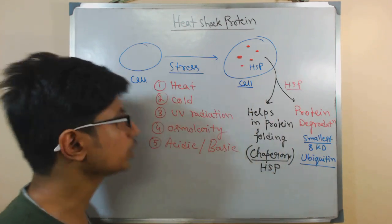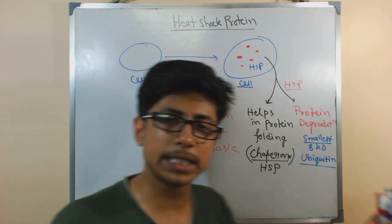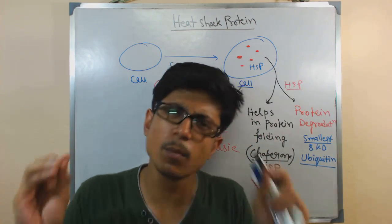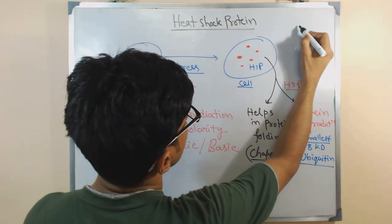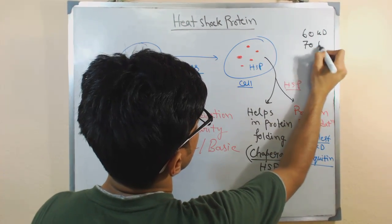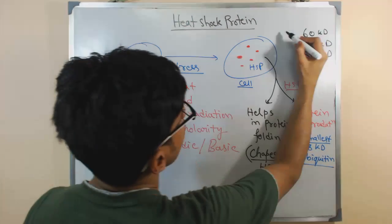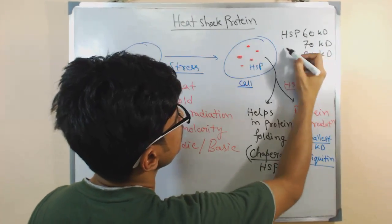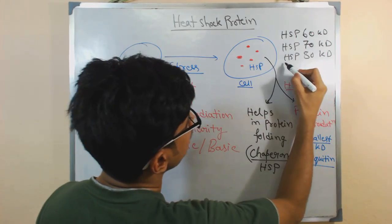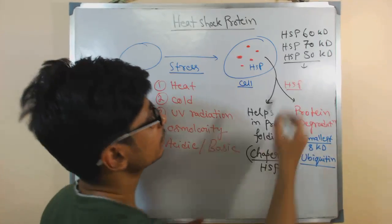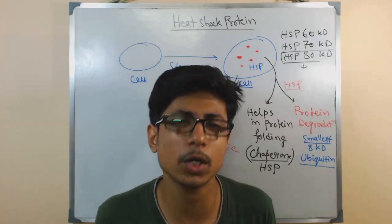Whether it's a heat shock protein, cold shock protein, or any stress-response protein, all of them fall in the heat shock protein category. These proteins share a common feature: they are small to moderate in size, with similar molecular weights. Some have molecular weights of 60 kilodaltons, some 70, some 80. They are named according to their molecular weight — for example, HSP60, HSP70, and HSP80. HSP70 is among the most studied heat shock proteins and is found in bacteria, eukaryotes, and everywhere else.